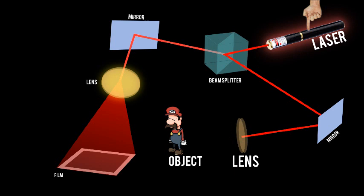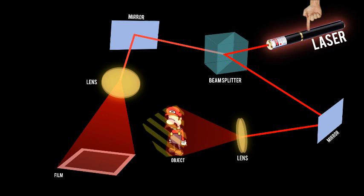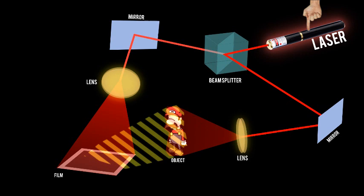When the object beam reflects off the subject, it carries with it information about the location, size, shape, and texture of the subject. Some of this reflected object beam then meets the reference beam at the holographic film, producing an interference pattern which is recorded in the light-sensitive emulsion.